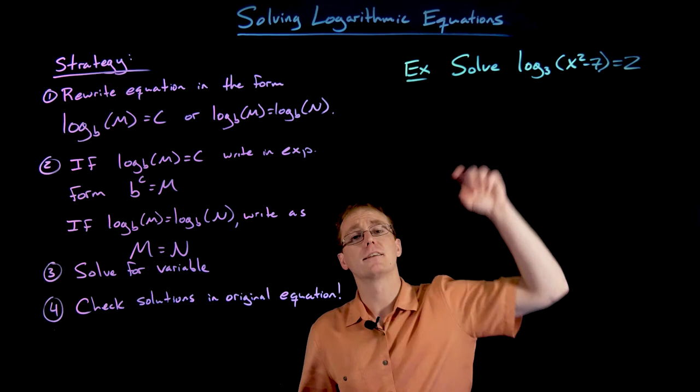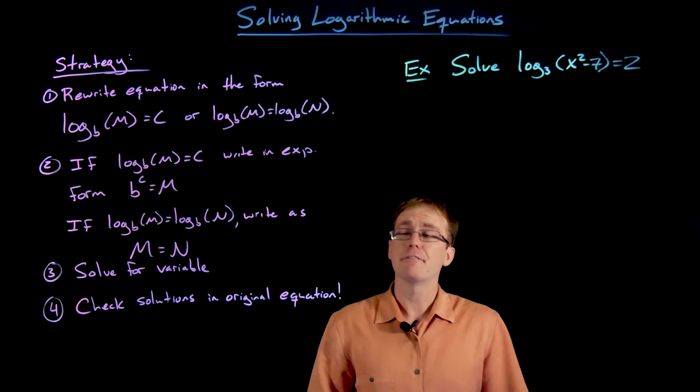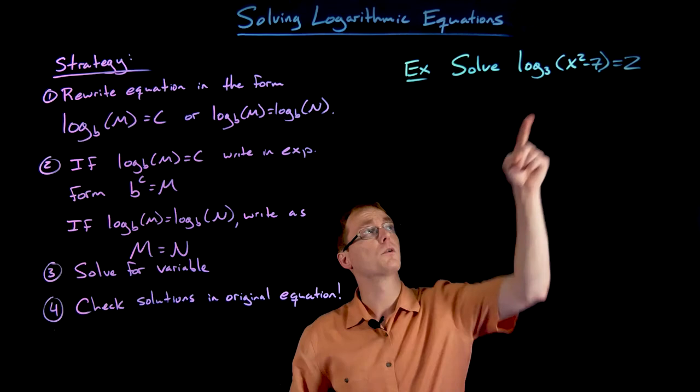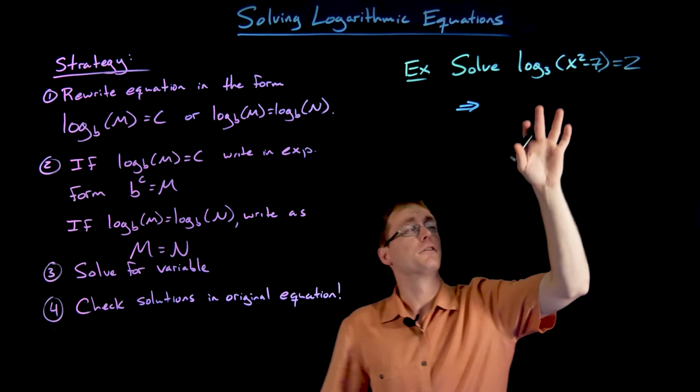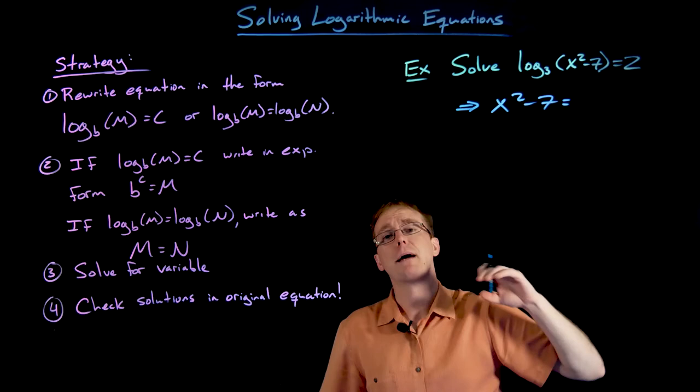Our first step here is to isolate the logarithm or get it as one log equal to another log. It's clear we're already in the first case — we have our logarithm equal to a single number — so we move to step two and rewrite the logarithmic equation in its exponential form. To convert, the inside of our logarithm, x squared minus seven, is going to equal the base of our logarithm raised to the power our logarithm equals, which is three to the power of two.